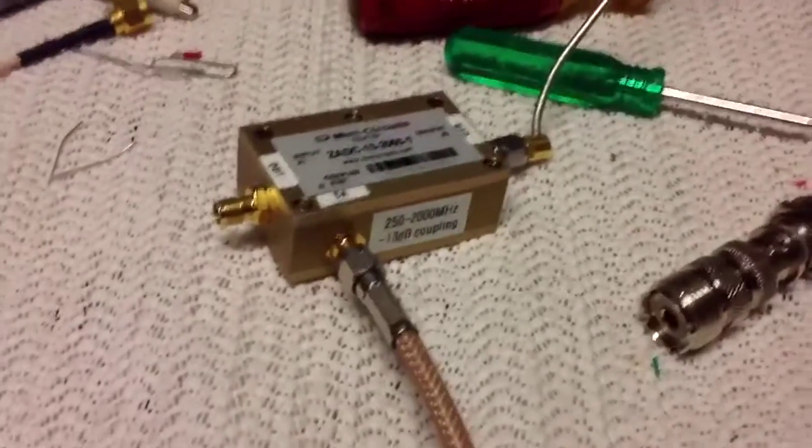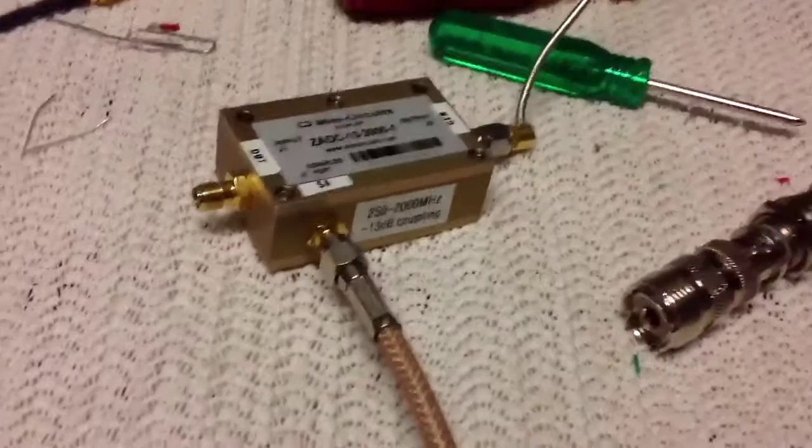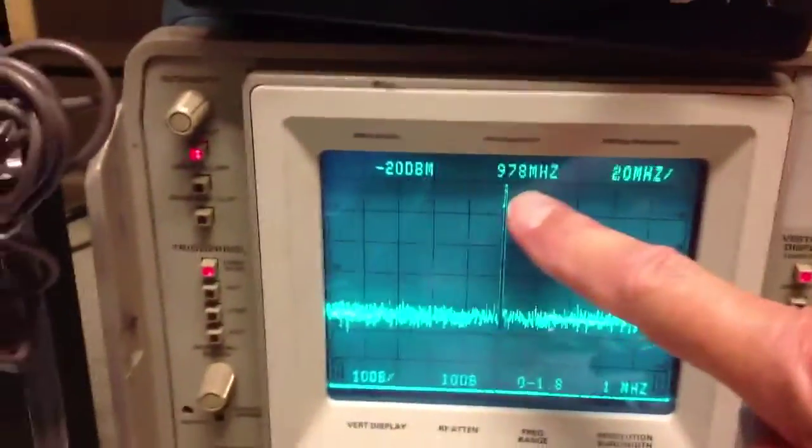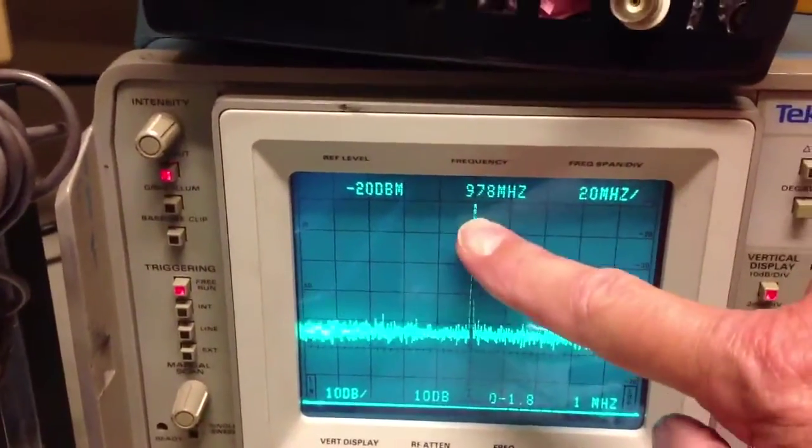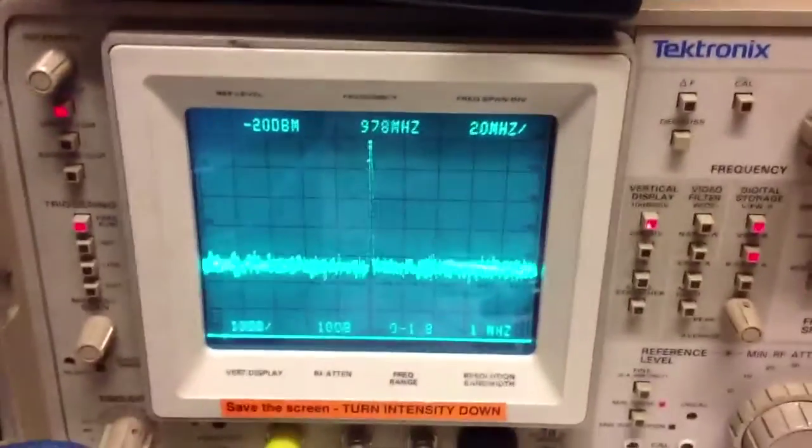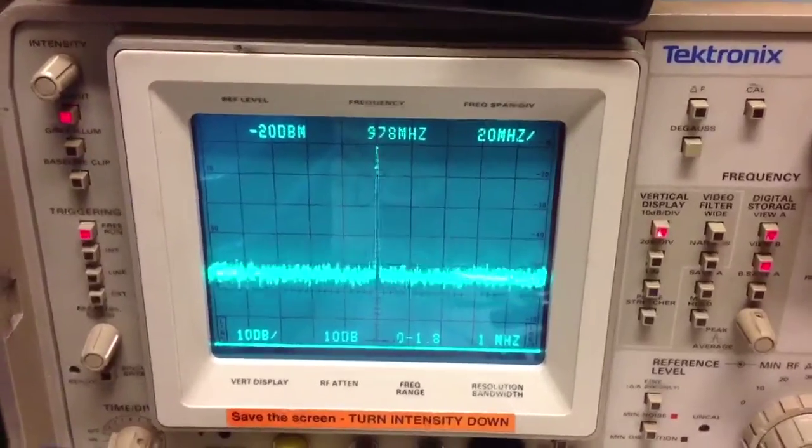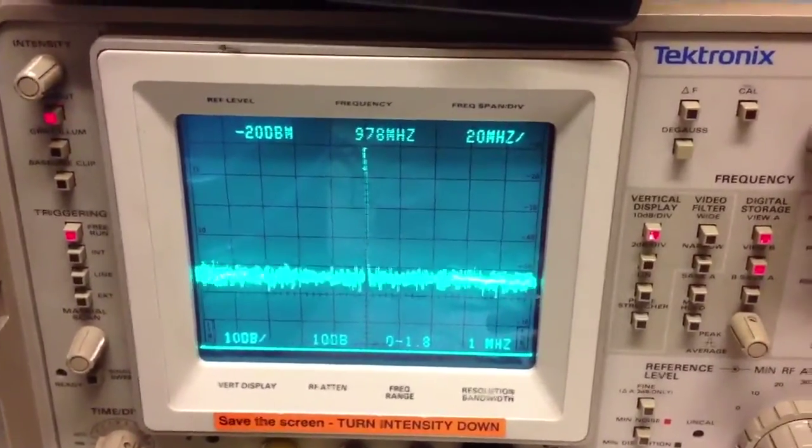So we have the return loss bridge, directional coupler that is, installed. We've got an open here, which is 100% reflection, and I'm letting that represent this point right here. So this is the 0 dBm, or 0 dB return loss level, and I just adjust the generator until I get that reference point.